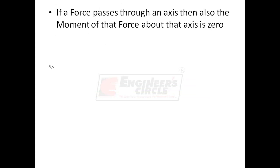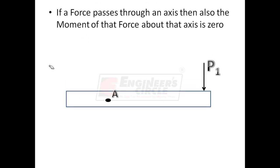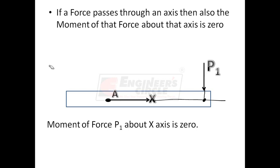The second point about moment is: if a force passes through an axis, then the moment of that force about that axis is also zero. Consider the body with load P1 and find the moment at point A about the X axis. Since the X axis and load P1 are intersecting, the moment of load P1 about the X axis is zero. In summary, if a force passes through (intersects) an axis, the moment of that force about that axis is zero.